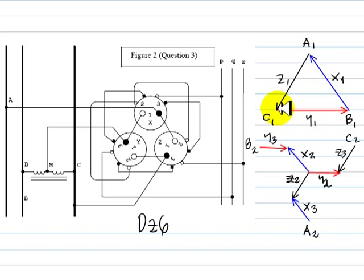And the tip of Z1 is connected to C1. Yes, the tip of Z1, this one, is connected to phase C.